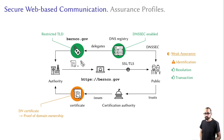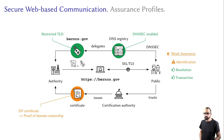Now, let's say you have the same setting but this time with a DV certificate instead of an OV or EV certificate. Again, the restricted TLD indicates that you're communicating with a governmental website, as is the case for berenco.gov, but you wouldn't know with whom exactly you're communicating since you need extra pieces of information to find that out. So we argue that identification is ambiguous, and as such we consider this setting as having a weak assurance profile.